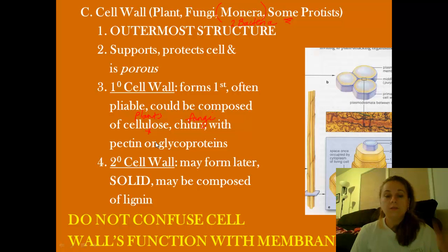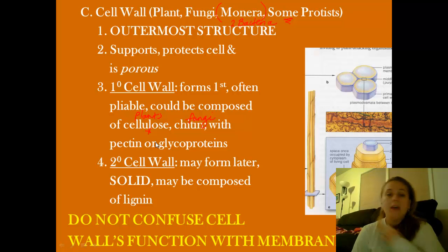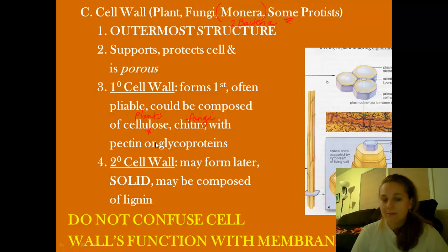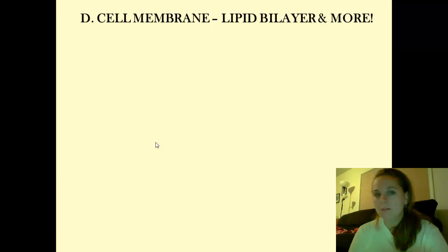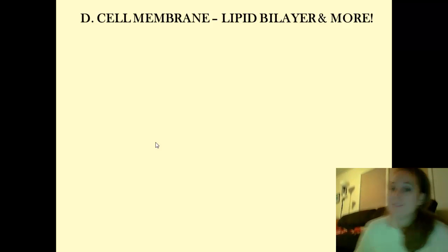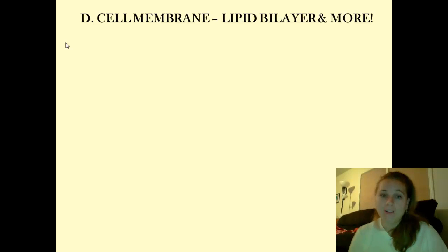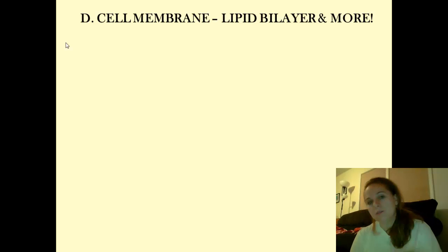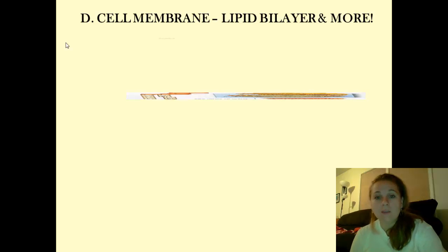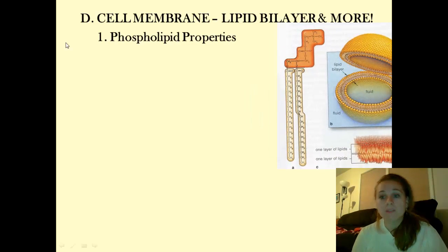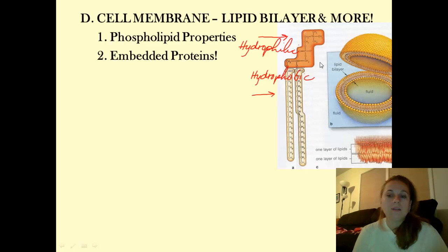Do not confuse the cell wall's function with the cell membrane's function — they are two different structures. Every cell has a cell membrane; not every cell has a cell wall. The cell membrane is not just a lipid bilayer — it's so much more than that. Besides its phospholipid structure, there are embedded proteins strewn throughout, which is why we refer to the cell membrane as the fluid mosaic model.